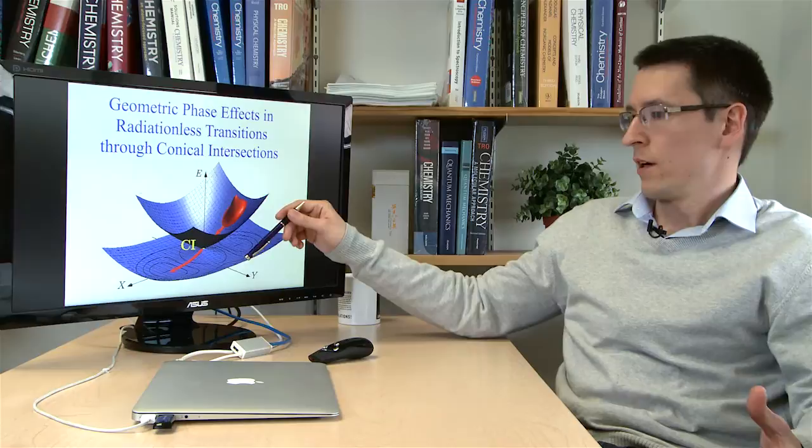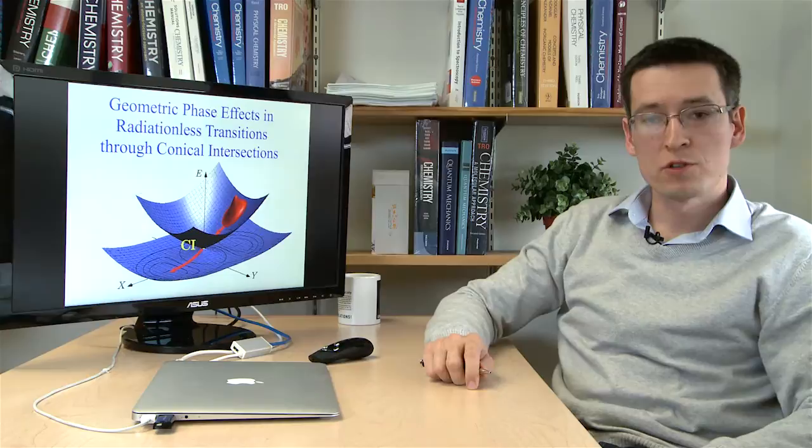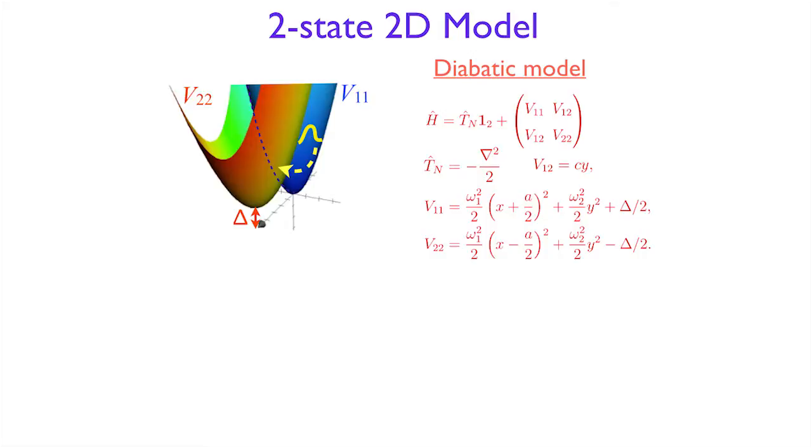Conical intersections are usually perceived as photochemical funnels, and when people consider them as photochemical funnels, they don't really think too much about geometric phase effects. Geometric phase effects are mostly perceived as something that is going on if you artificially move the wave packet adiabatically on the lower surface around the conical intersection. But interestingly, geometric phase effects can actually interfere with the actual transitions, and today we'll see how they modify the transitions between the upper state and the lower state.